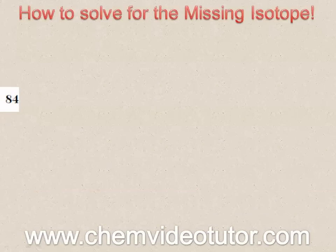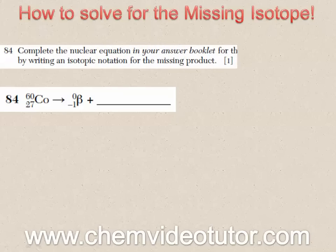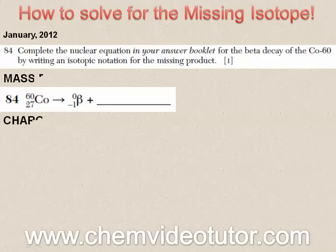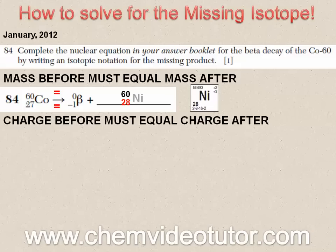But even if they decide to change the letters and numbers around on you, like they did here with another question numbered 84 from the January 2012 Chemistry Regents, the rules for mass and charge still apply. So 60 before needs to equal 60 after, and 27 equals negative 1 plus 28 — and not 26, like most students tend to think. As for the symbol, 28 is the atomic number for nickel, which completes the notation for the missing product.